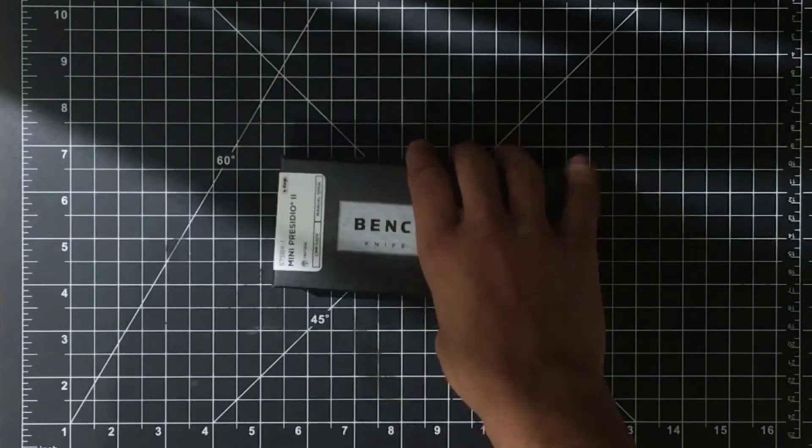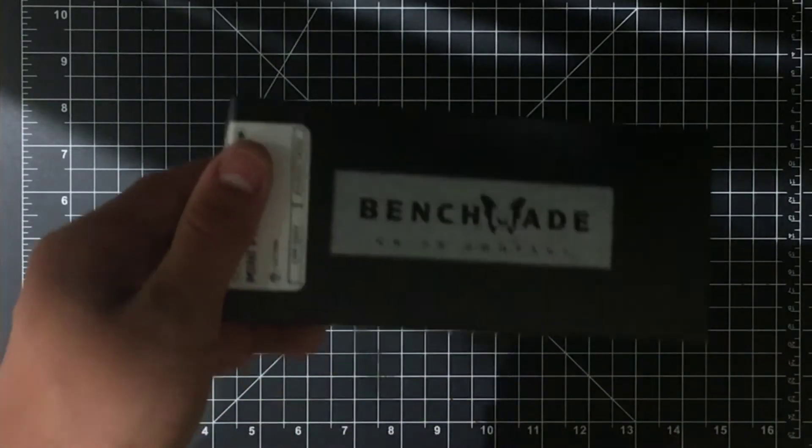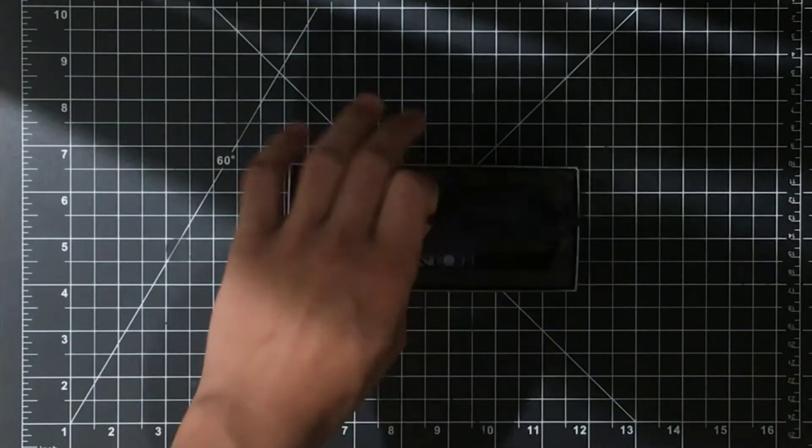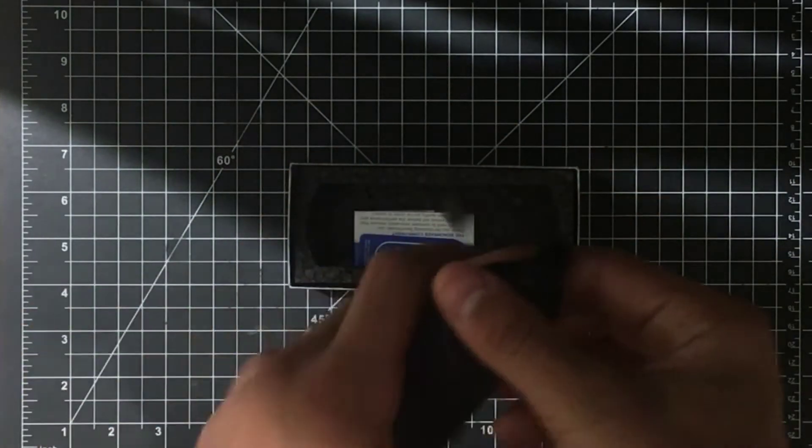Let's take it out of the box. This is a different box than the blue box, which I'm used to. This is the black class. It comes with the knife. It's a really nice box. I love the box.